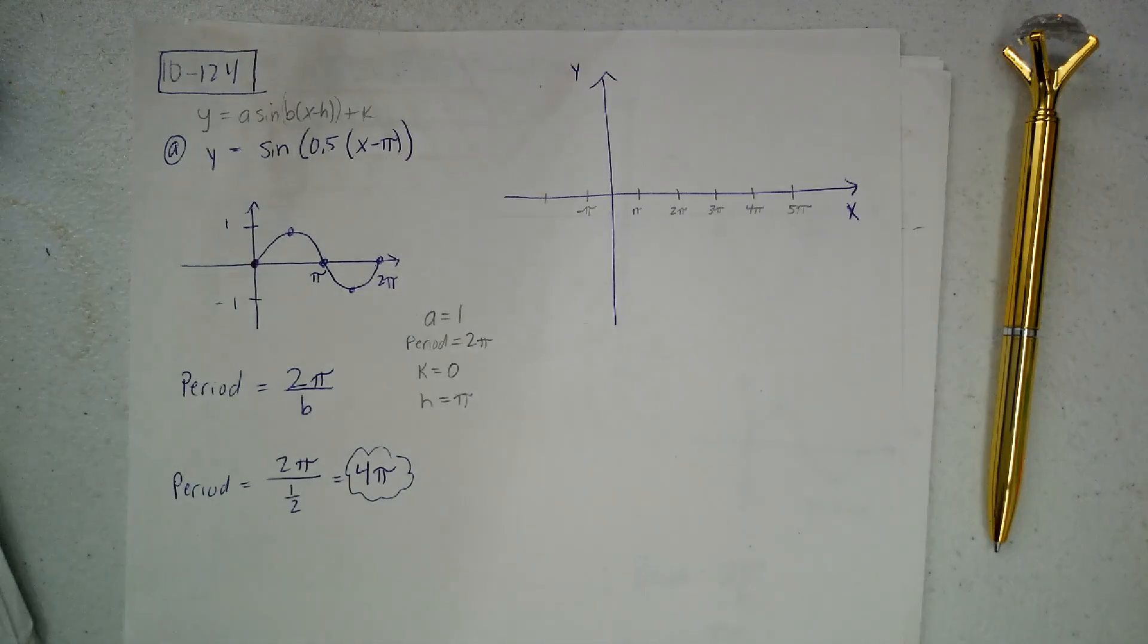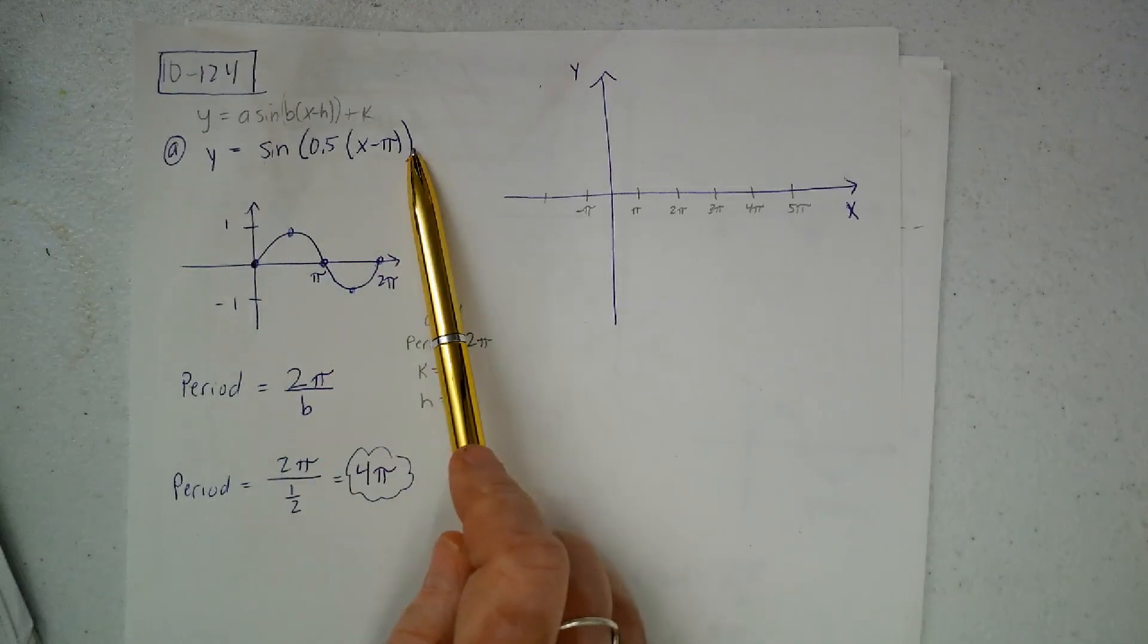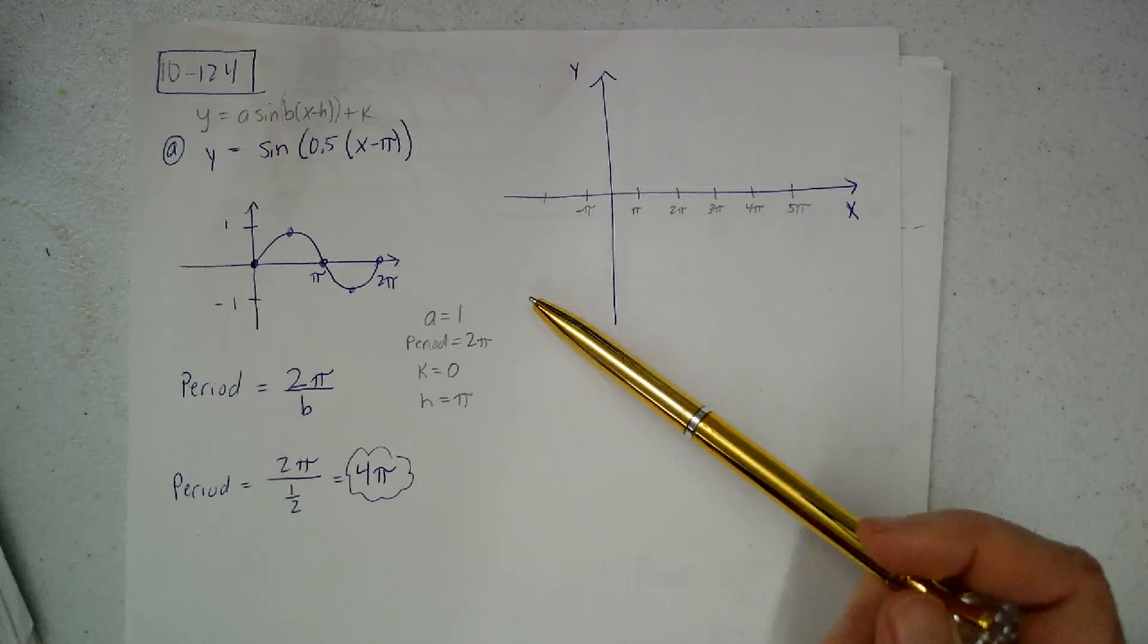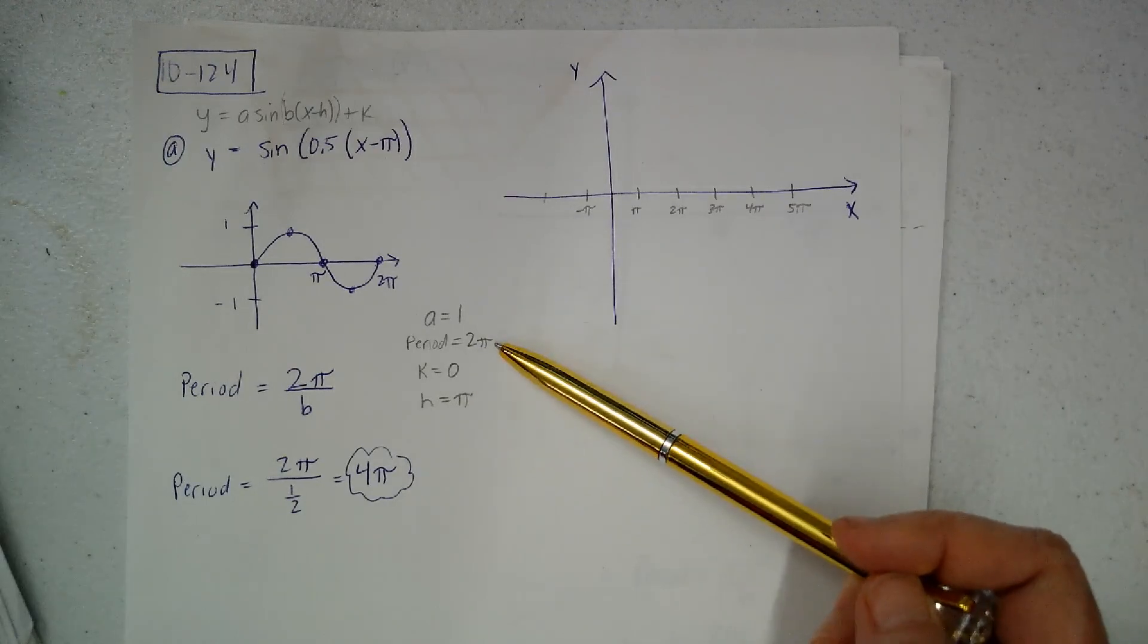Here's Integrated 3, problem 10-24. It wants us to sketch a graph. So what I do is I'll usually try to find out what A and H and K and the period are.